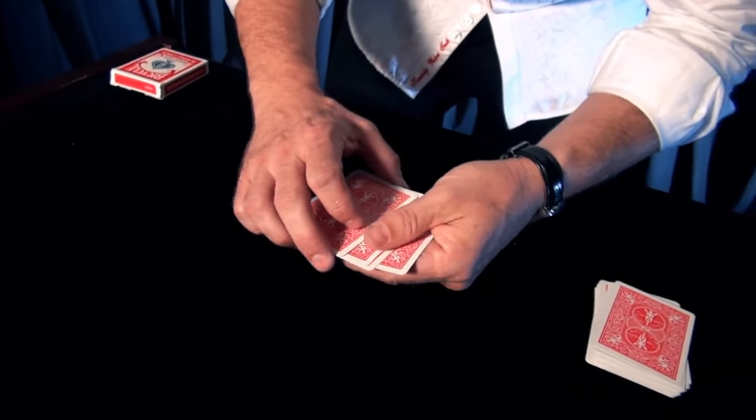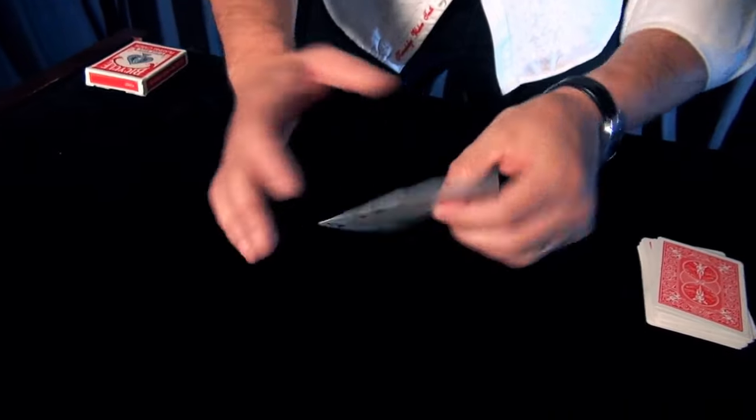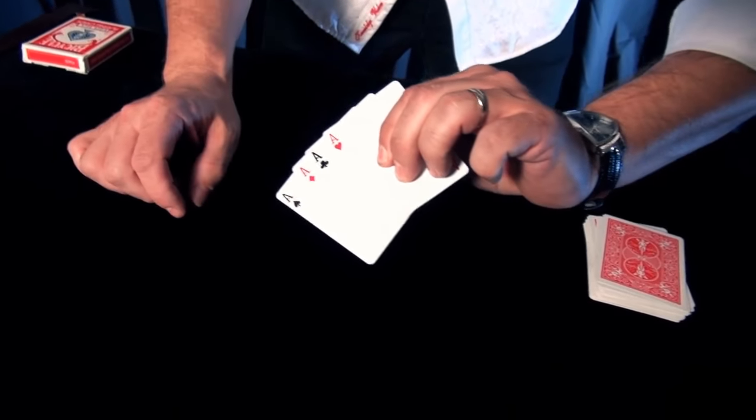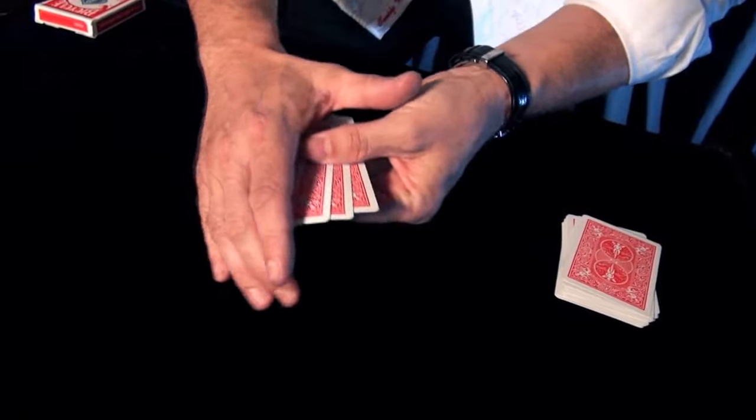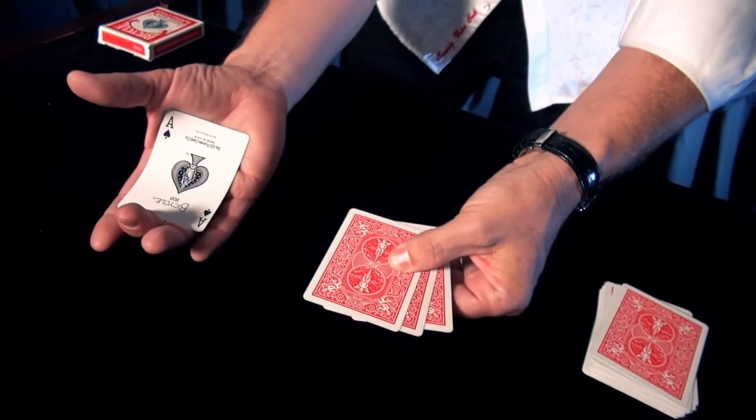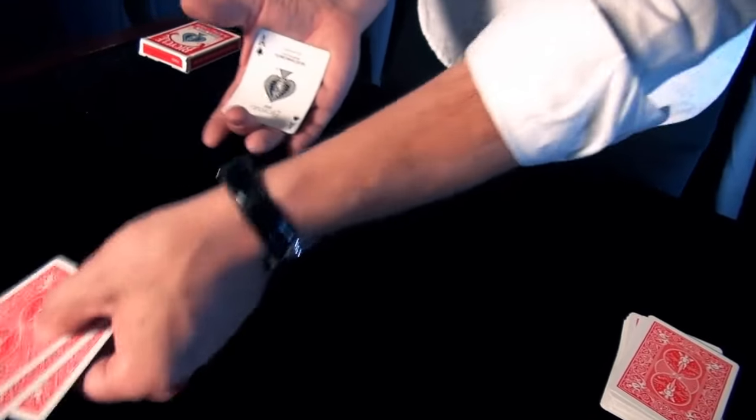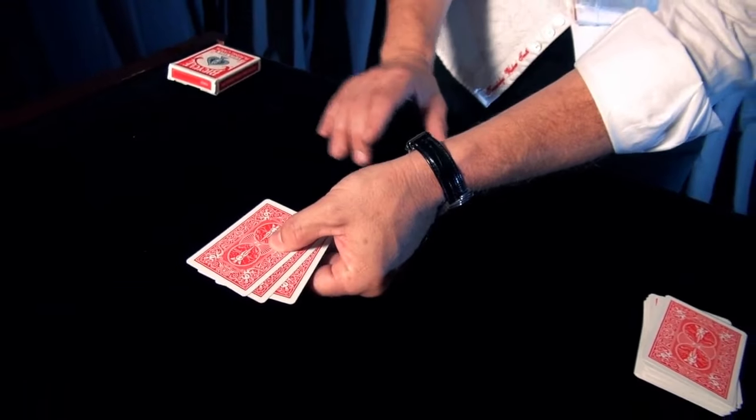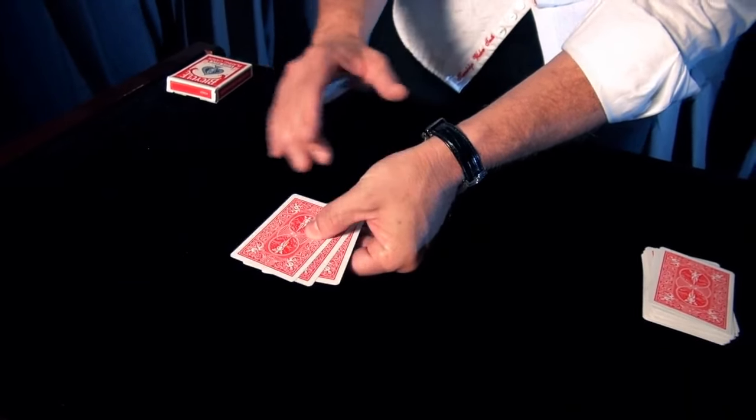The second technique is known as the palm, and it's basically exactly what it sounds like. Say I want to palm the ace of spades. You basically place the ace in your hand and palm it off like this. Now why is this valuable? The reason this is so cool is because when the dealer deals you cards, you can secretly add that palmed ace to your hand.